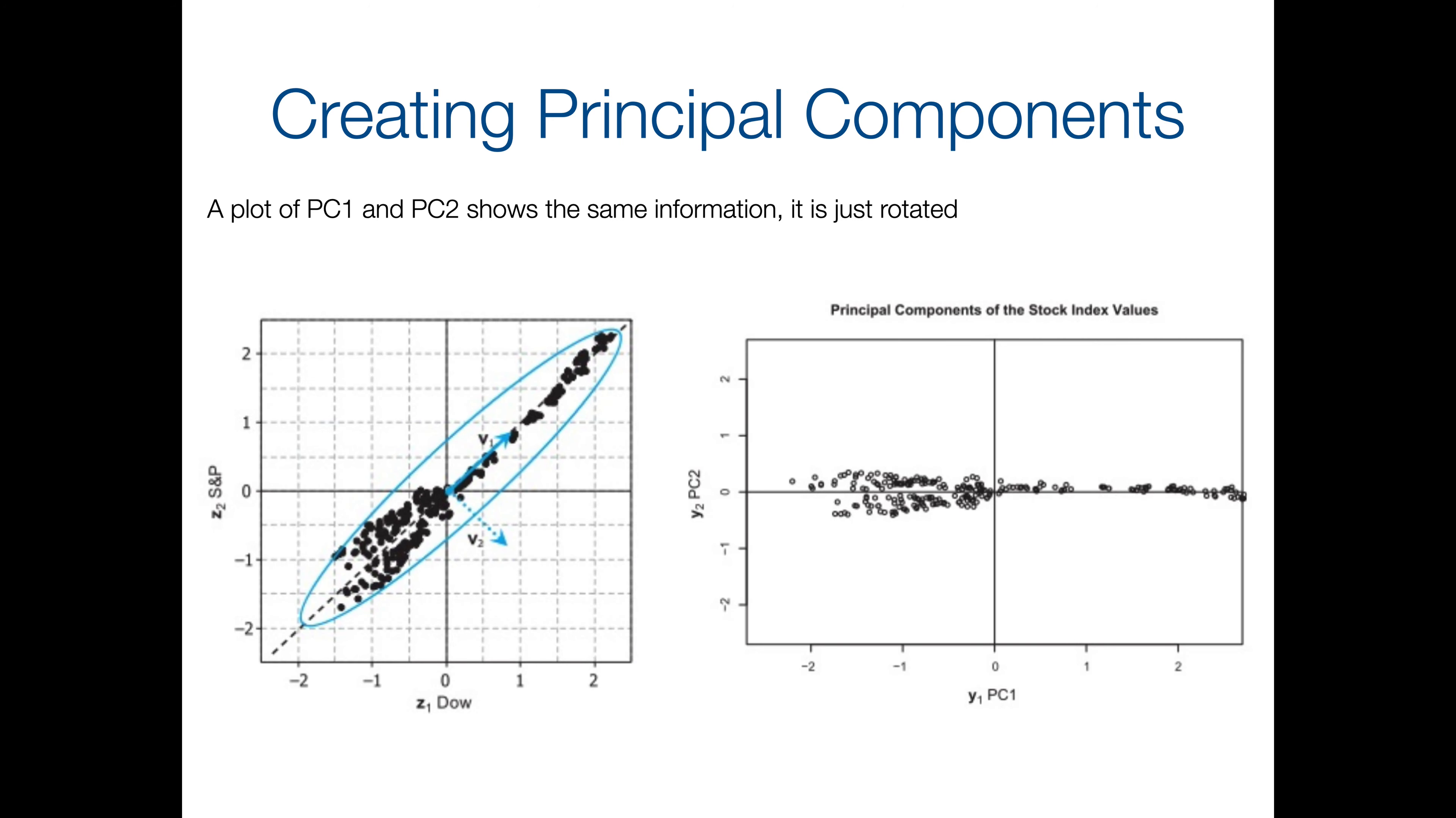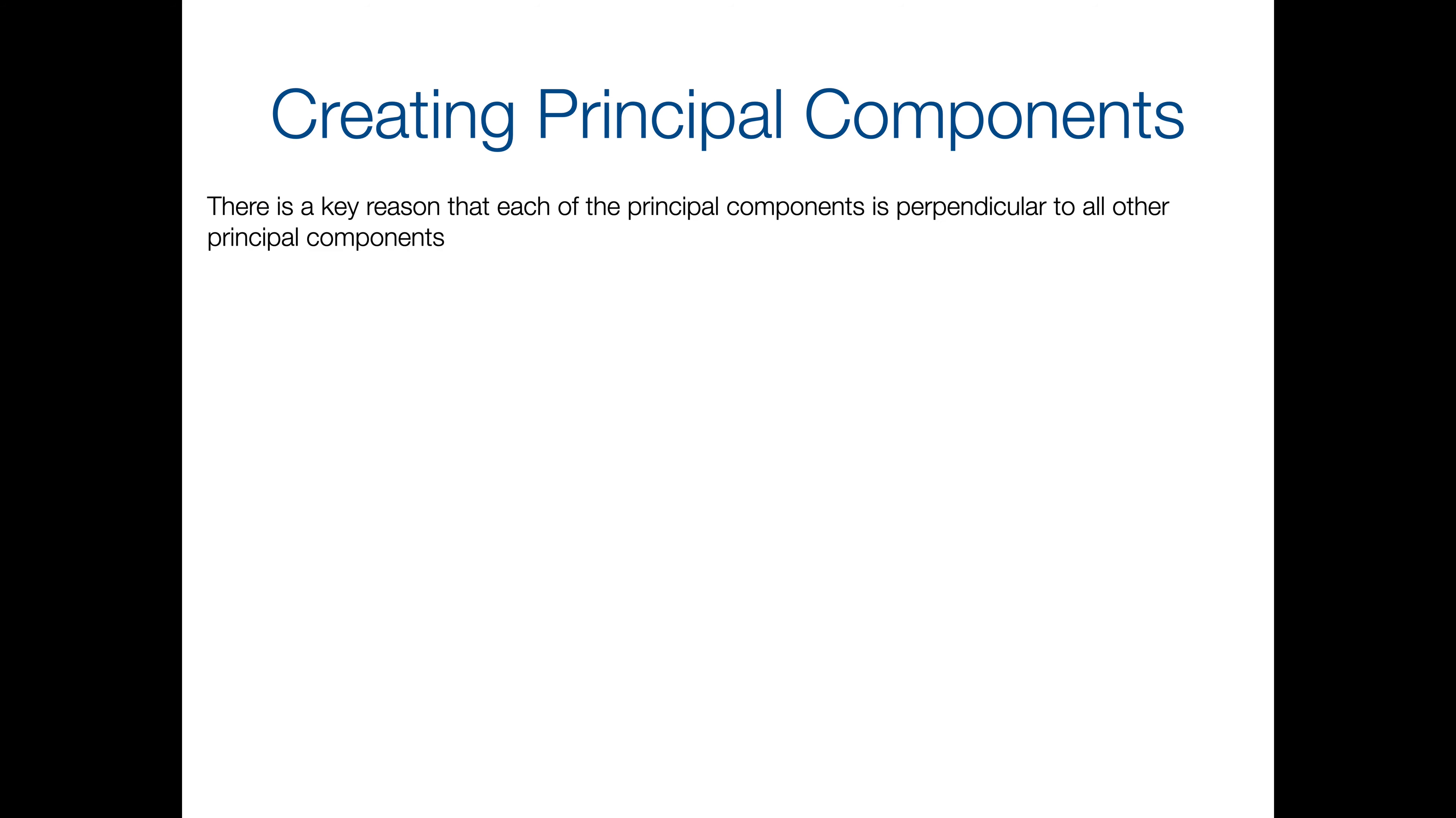And we can look at some plots. So on the left, we have the plot of the standardized variables z1 and z2. On the right, we have a plot of the principal components y1 and y2. Notice that this is giving us the same information, it's just rotated. So we haven't lost any information, we've just rotated what we had. And earlier we saw that v1 and v2 were perpendicular to each other. That means that the principal components will also be perpendicular to each other, and to all other principal, like any two principal components are going to be perpendicular. And that's important.